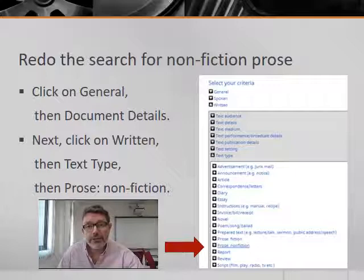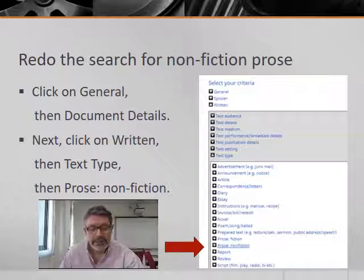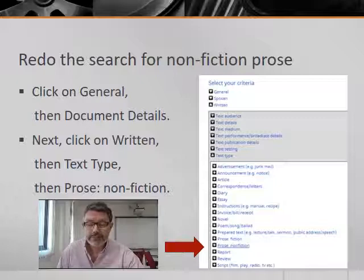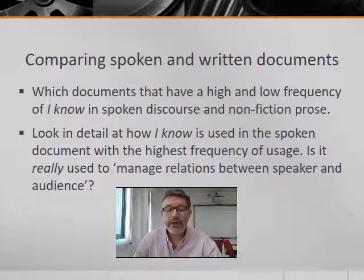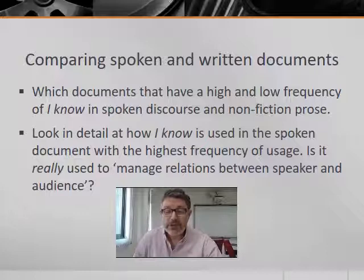List the highest and lowest normalized frequencies and note the documents in which they appear. Once you've noted the documents, click on Advanced Search to start another search. Click on General, then Word Search and type 'I know' into the word/phrase concordance box. Then click on General, Document Details — Spoken or Written — and this time select Written Texts. Click on the General Written heading and click on the Text Type. Then finally click on Prose, Non-fiction. When the results are displayed, scroll down the page and look at the normalized frequencies of the use of 'I know' in the written texts listed. Again, the normalized frequency gives the number of instances of 'I know' per thousand words. Sort the results by clicking on the heading 'Norm' and note the lowest and highest normalized frequencies and the documents in which they appear.